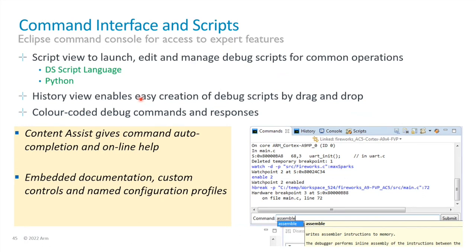DS enables several scripting languages. There's a proprietary language called DSScript — when you're running commands and connecting to a target you can see those commands running in the background, highlight them, save them to a script, and play them back later. If you need more functionality, you can implement connection and automation with Python, which allows you to read and write memory locations, read and write CPU registers, and write full algorithmic loops. There is also embedded documentation on each command you can use to build scripts.